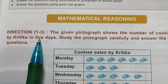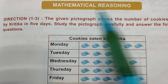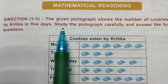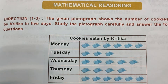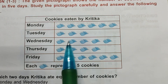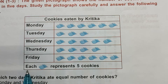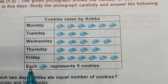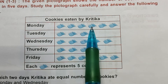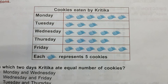Direction 1 to 3 means questions 1 to 3 are based on this pictograph. The given pictograph shows the number of cookies eaten by Kritika in five days. Study the pictograph carefully and answer the following questions. Each picture represents five cookies — so one picture shows five cookies.